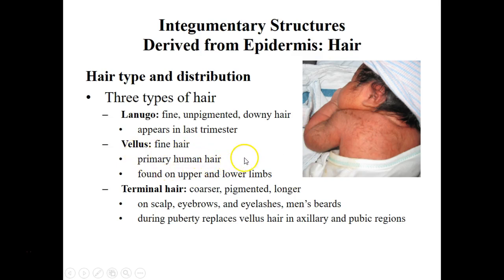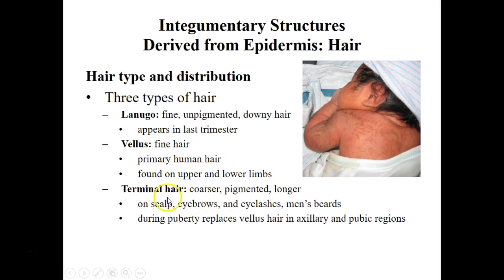Vellus hair is the primary hair found on the upper and lower limbs of the body — the soft hair that covers the arms and legs. As we get older and hit puberty, some of the vellus hair turns into terminal hair. We see terminal hair on our head, on the faces of men, eyelashes, eyebrows, the axillary region, and the genital region. Terminal hair is thicker hair.